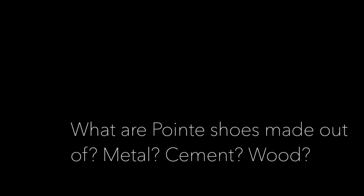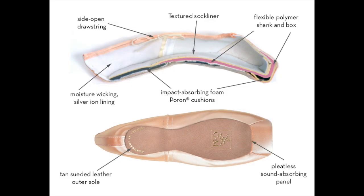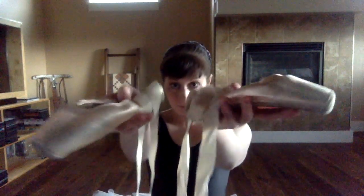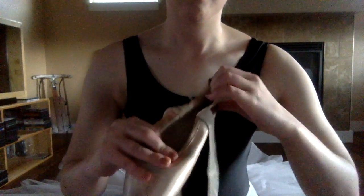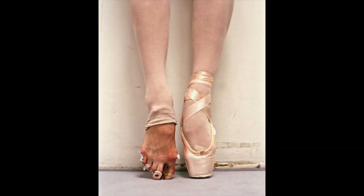What are pointe shoes made out of — is it metal, cement, wood? Pointe shoes are made of layers of fabric and glue covered with satin. Pointe shoes do not have a heel like normal street shoes, but have a sole which is made of hard leather. Dancers sew satin ribbons and elastics around the ankle to keep the shoes on securely. The price of pointe shoes varies between $50 to $100 or more depending on the make and style of the shoe. Many professional dancers have shoes custom made to their feet, which costs quite a bit more than a standard pair of pointe shoes.